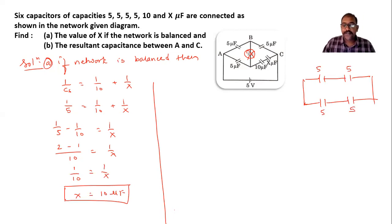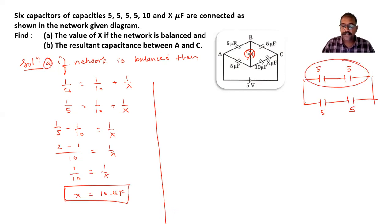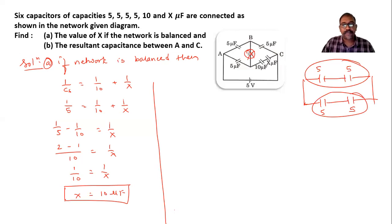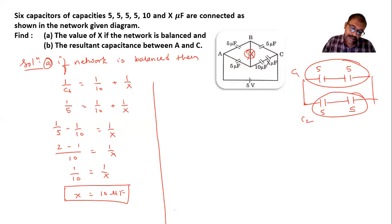So we have five and five in series, and another five and five in series. First we find this five-and-five combination as a parallel — I'll call this C1, and the other five-and-five combination as C2. Then C1 and C2 are connected in series.